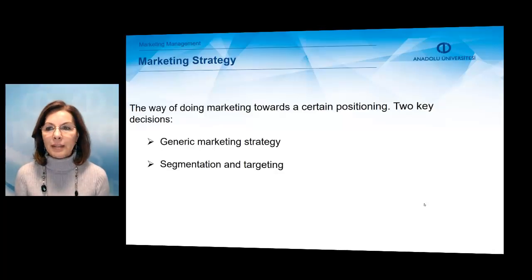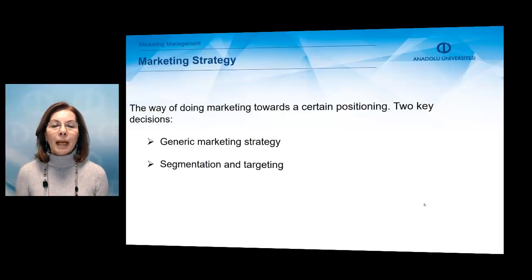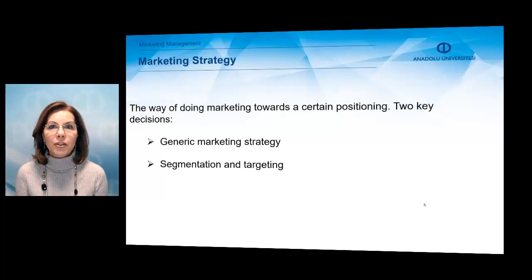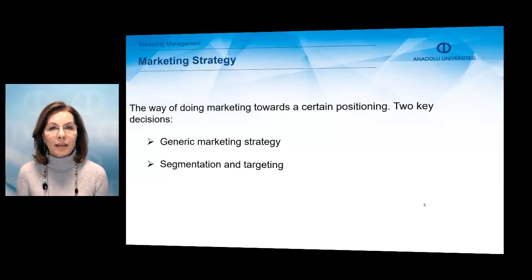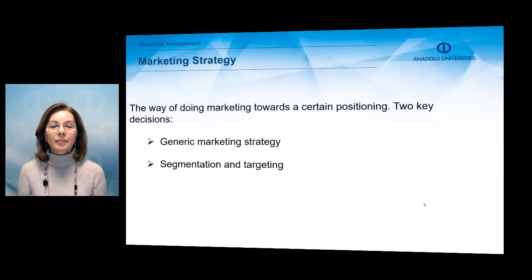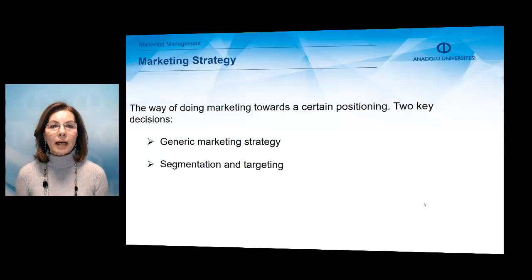This is about creating an effective and efficient marketing strategy. Marketing strategy is the way of doing marketing towards a certain positioning in a market. There are two key decisions for obtaining a successful marketing strategy, which are generic marketing strategy and segmentation and targeting. Generic marketing strategy is the first step, and based on this generic strategy, the next step is to decide the segmentation and targeting in a market.